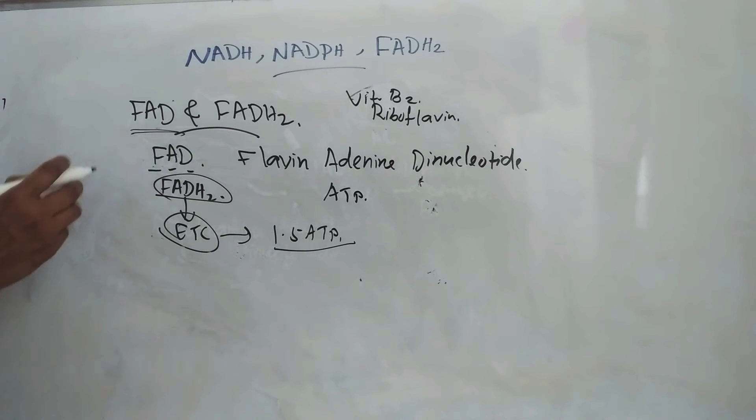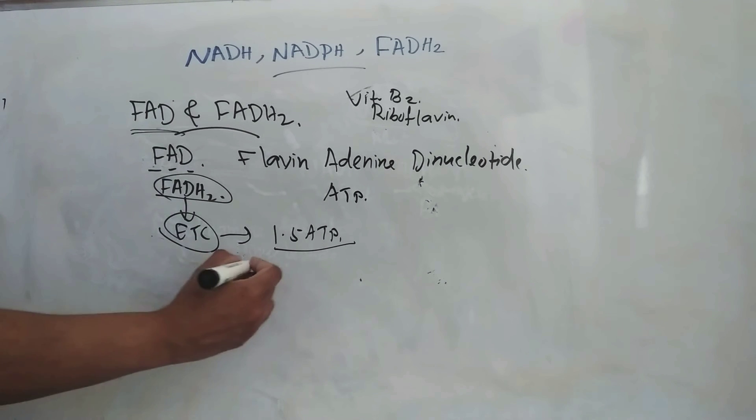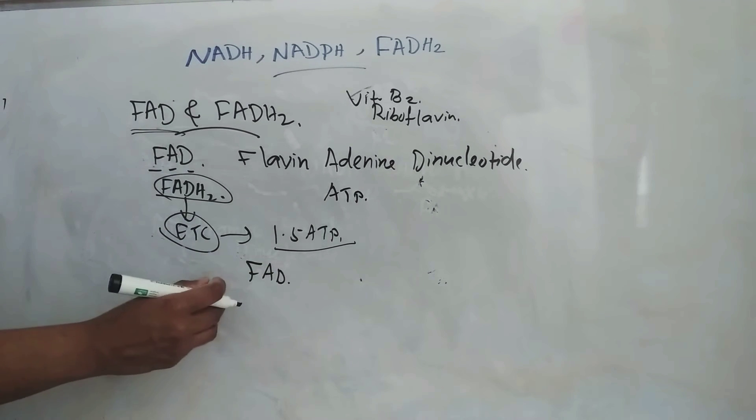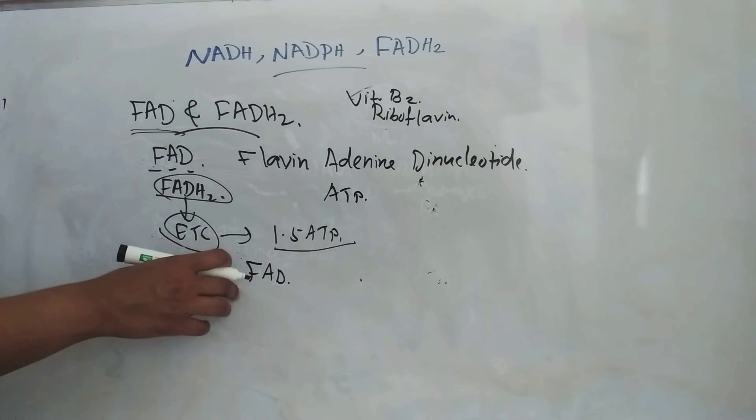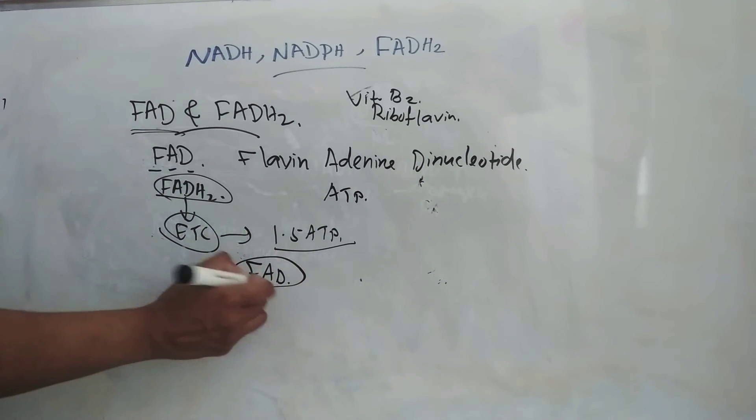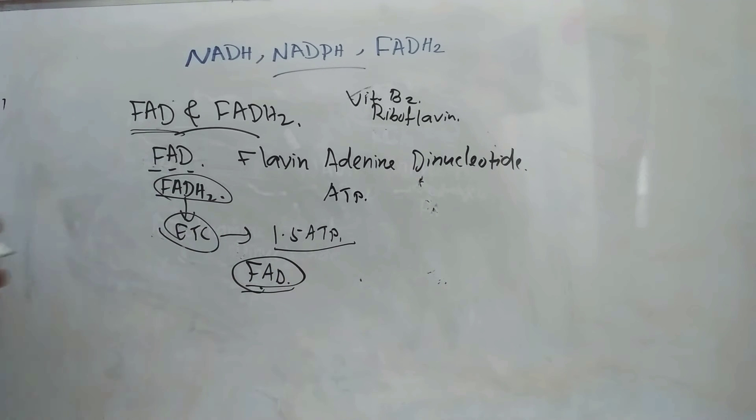Then this FADH2 has a more positive reduction potential than NAD plus. FADH2 has more positive reduction potential than this NAD plus and it is a very strong oxidizing agent. This FADH2 is a very strong oxidizing agent.